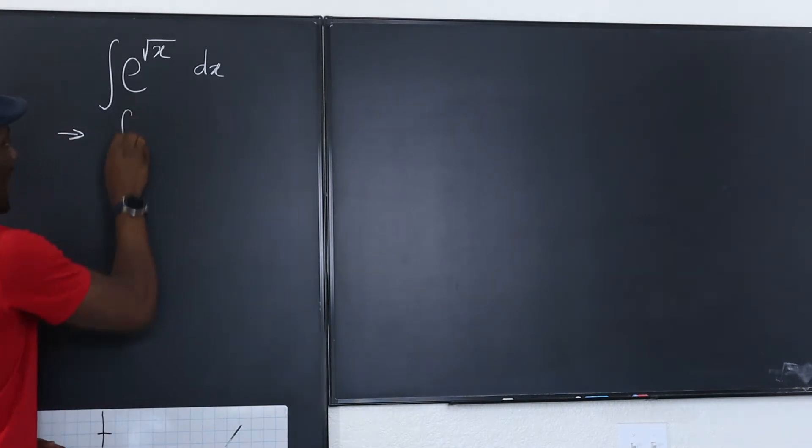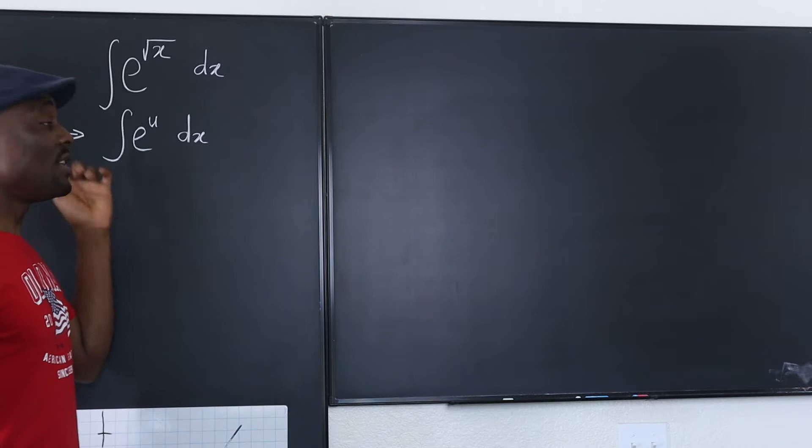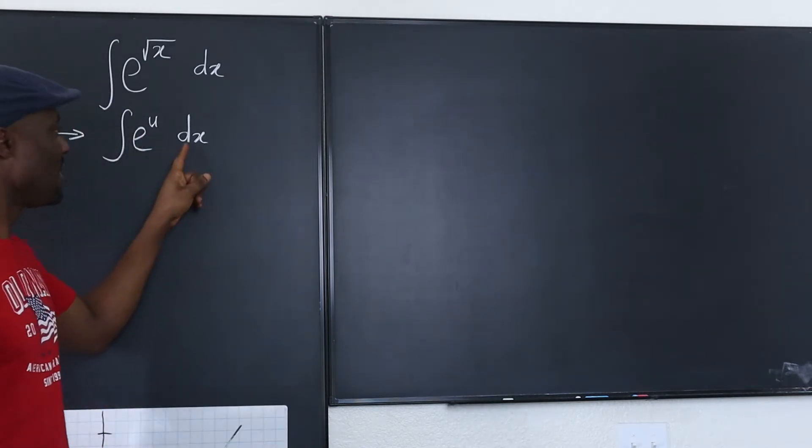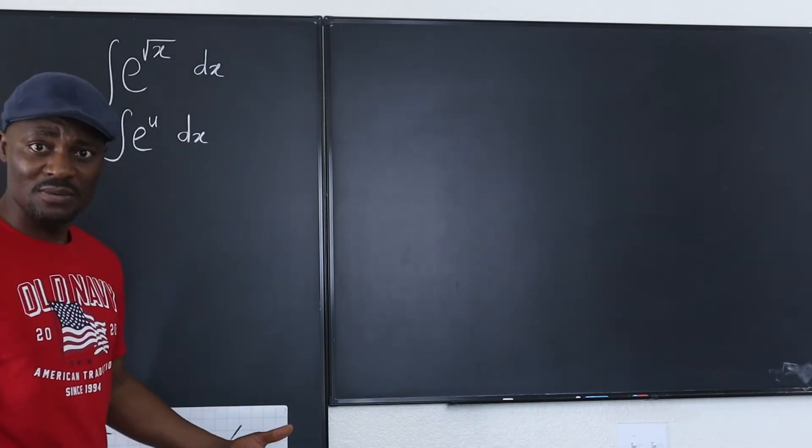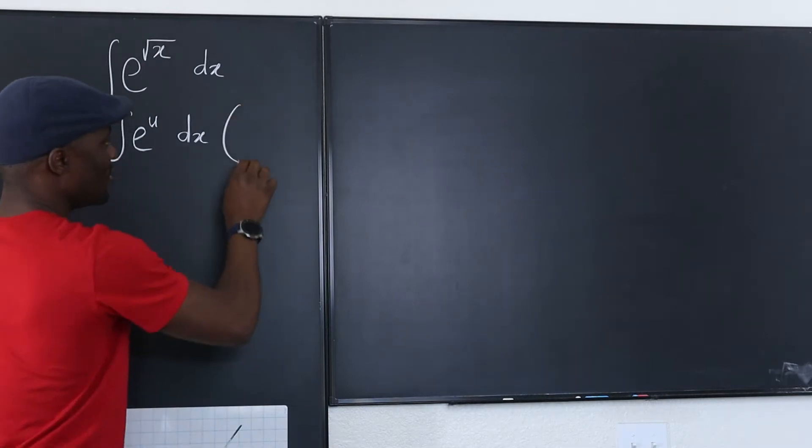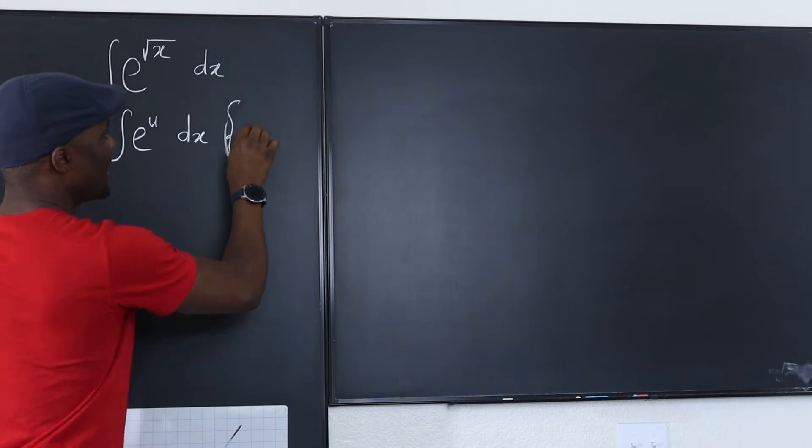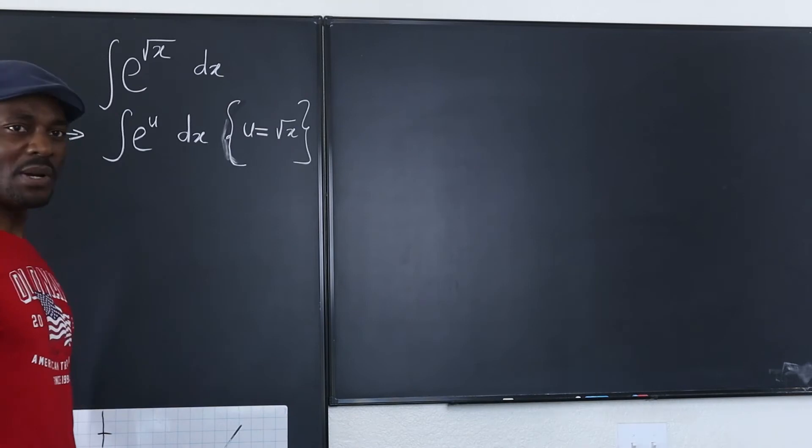Let's rewrite this as e to the u dx. Now this is easy to integrate because the integral of e to the u is e to the u. However, that's only possible if this is du. So you want to rewrite dx as du. Let's use this wiggly sign which tells us that u has just replaced the square root of x. So you see I've made it simpler.